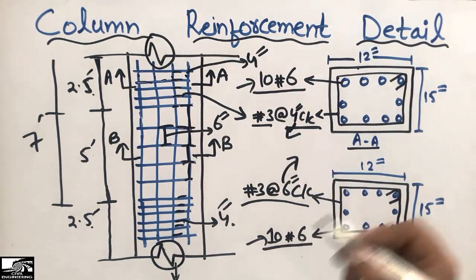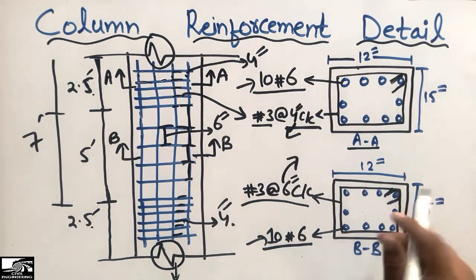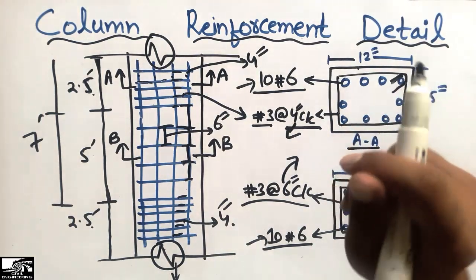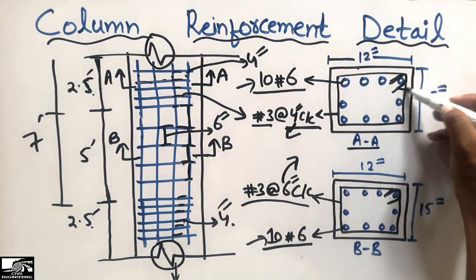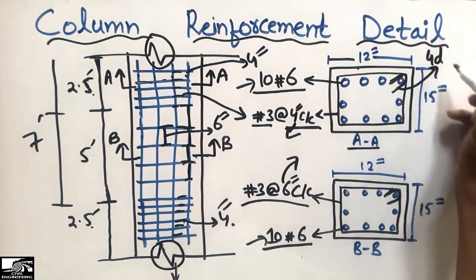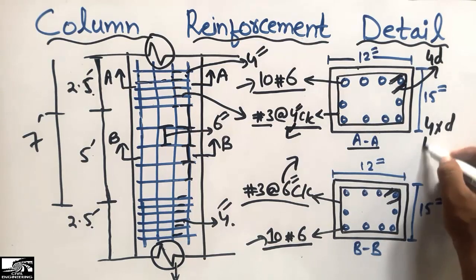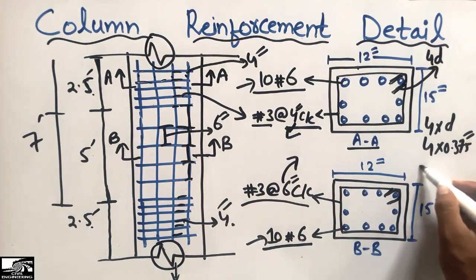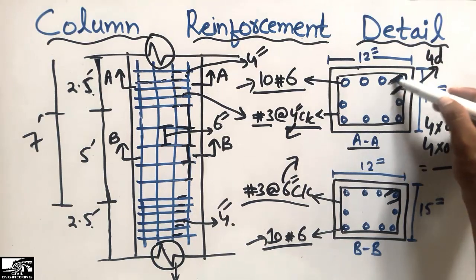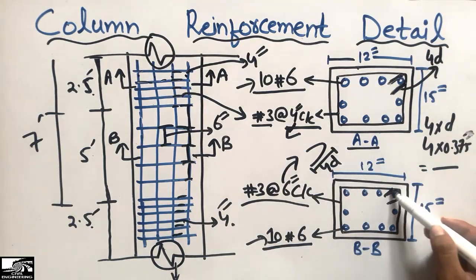The other thing is the hook bar. To hold the bars, a hook is provided at the end of the column cross-section — you will see practically that there is a hook provided in each tie. The hook distance is usually taken as 4 × d, where 4 is a constant and d is the diameter of the stirrup, which is a number three bar at 0.375 inches. Putting this in, we can calculate the length of the hook bar.